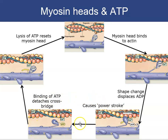After the power stroke, a new ATP binds to the myosin head, breaking the link between myosin and the active site, freeing it to form another cross bridge. The myosin then splits that ATP into ADP and phosphate, recharging and recocking the head. The cycle repeats over and over as long as calcium is present.